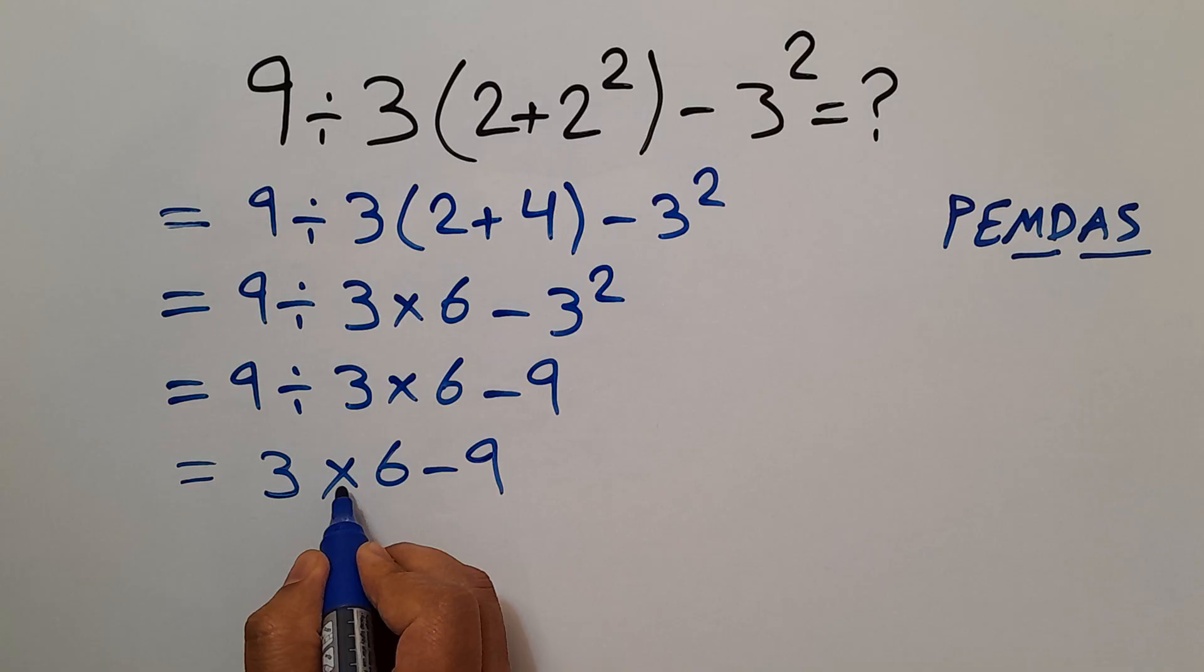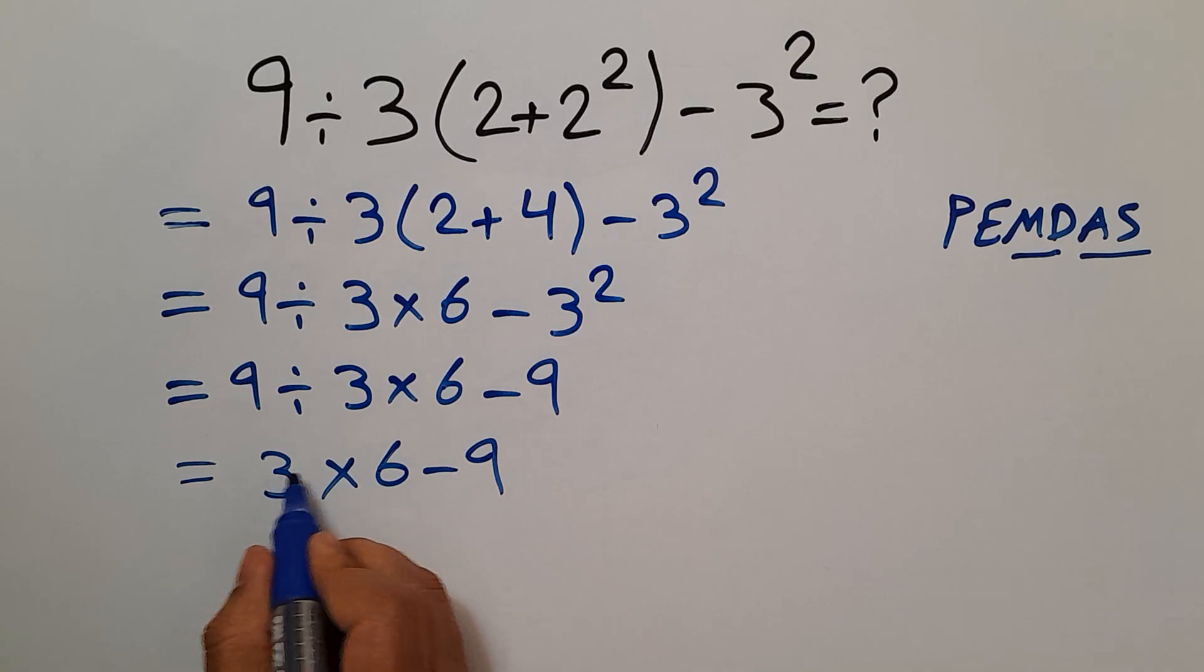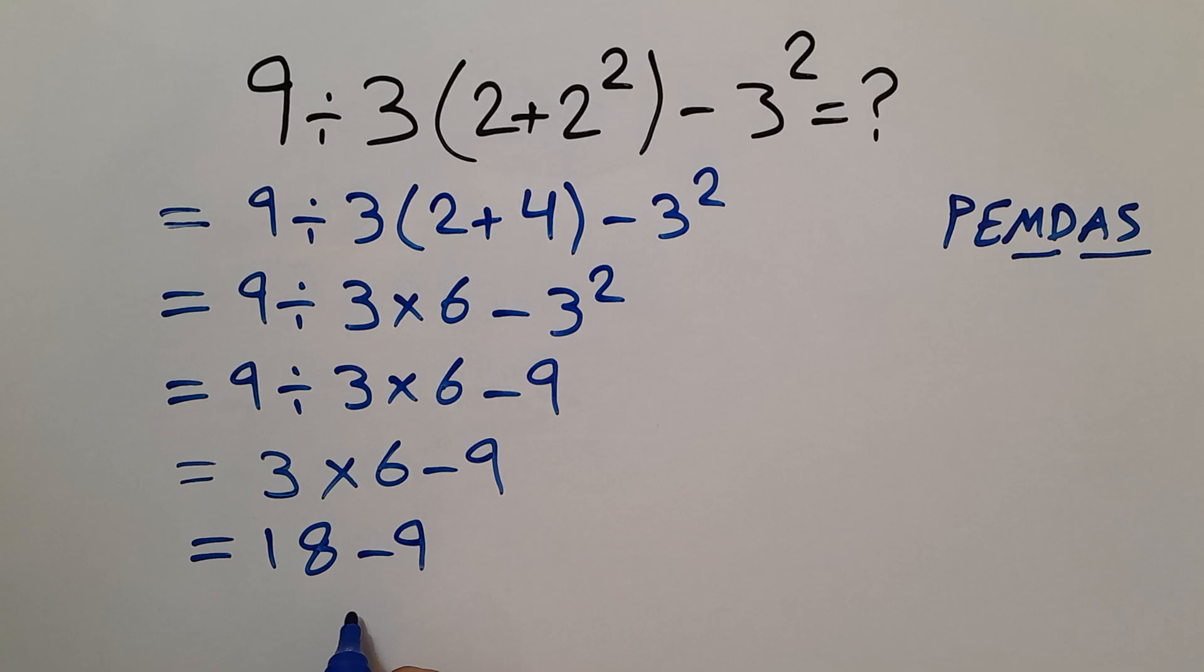Multiplication has higher priority than subtraction, so first this multiplication. 3 times 6 equals 18, so 18 minus 9, which equals just 9.